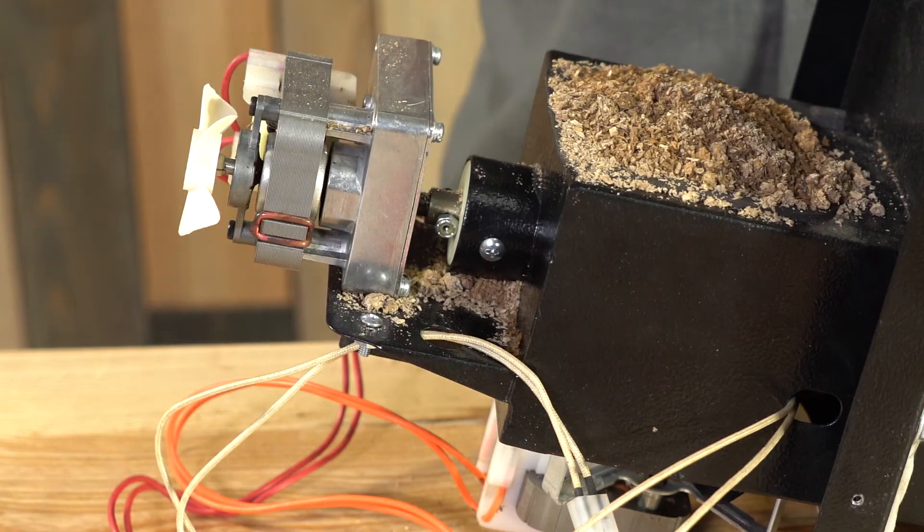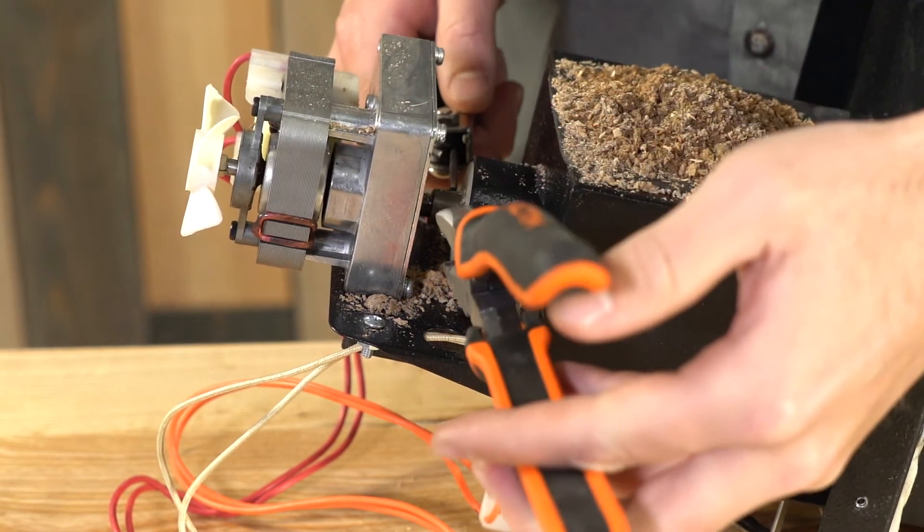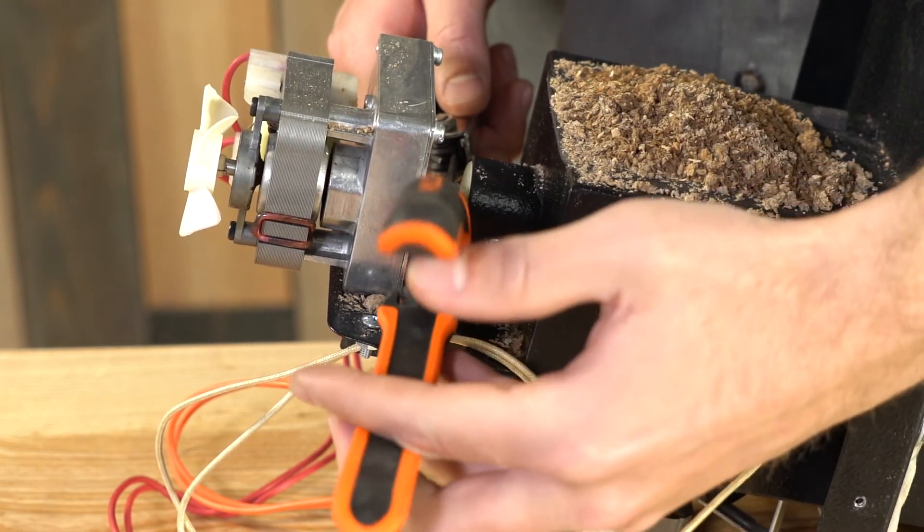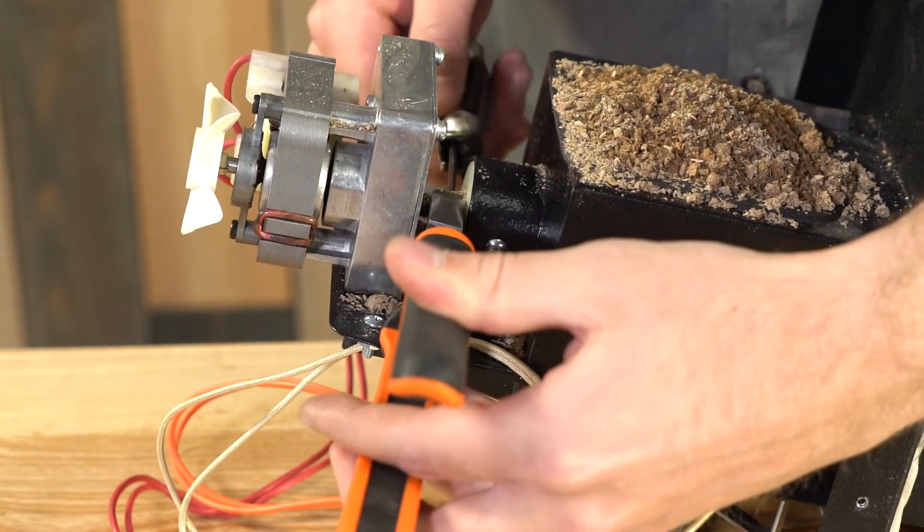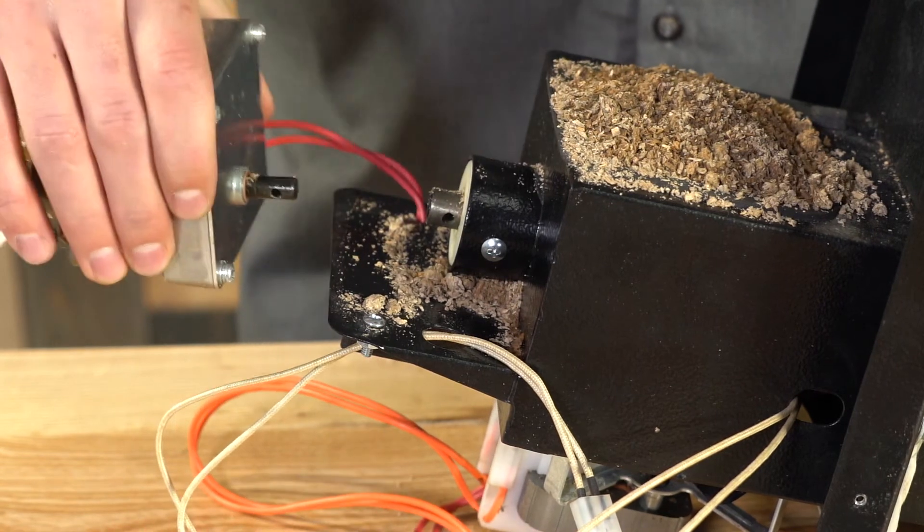The first thing we're going to do is remove the shear pin that is holding the auger motor to the auger shaft. You're going to need your Allen key and the pliers to hold down that nut. This will then allow us to remove the motor completely from the shaft.